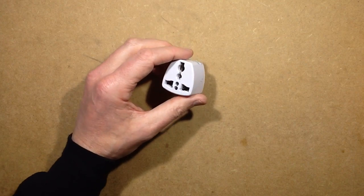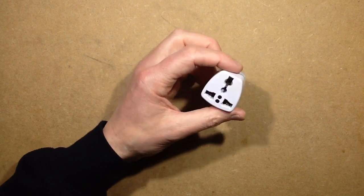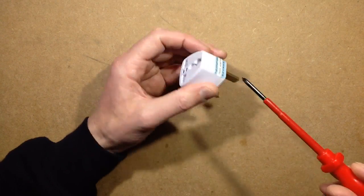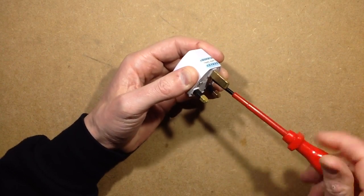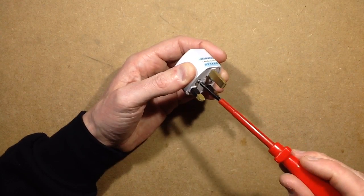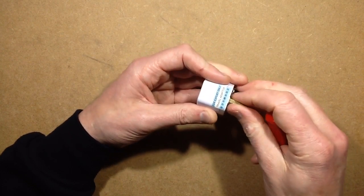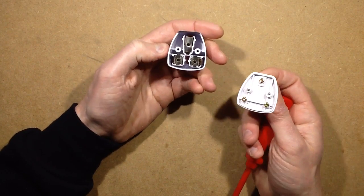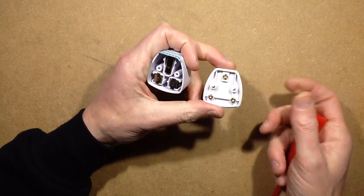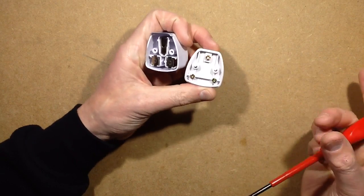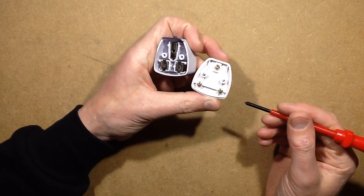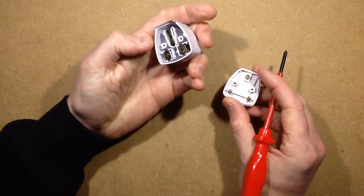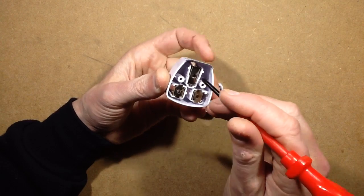But anyway, let's open it up and take a look inside and see why that earth isn't connected, because it does look like it goes all the way back. Never worked out why it says 'for export only' - that kind of explains things. These screws are holding the pins in and they just press against the metal.